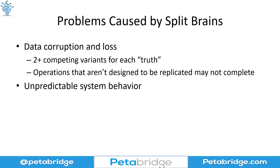The other problem you're going to run into is unpredictable system behavior. No one designs and tests their system, unless they're intentionally doing it, to handle multiple instances of a single source of truth. By its very nature, there's only meant to be one source of truth in that system. And now when you suddenly have two of them, the way your system may perform isn't necessarily going to be up to your specifications. This represents a lot of problems, potentially, for developers that are trying to operate a decent-sized networked software system.